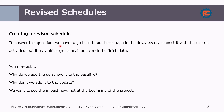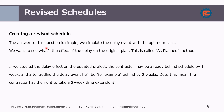To answer this question, we have to go back to our baseline, add the delay event — in that case, changing the block type — connect it to the relevant activity, and see how it looks. You might ask: why do we need to add a delay event to the baseline? Why don't we add it to the updated schedule? We want to see the impact now, not at the beginning of the project. We simulate the delay event with the optimum case. Later on, we will study the claims and the different analysis methods where we will consider the actual situation while evaluating the claims. But for now, we need to see the as-planned method and how it impacts our project.